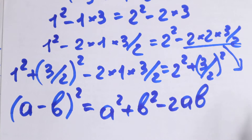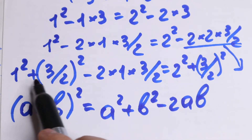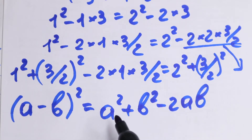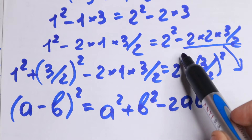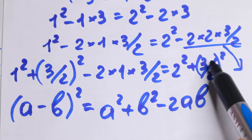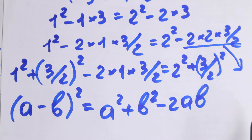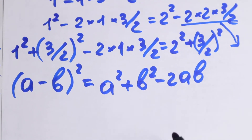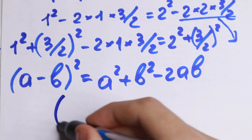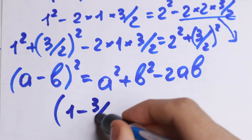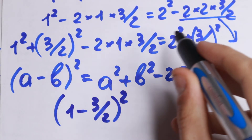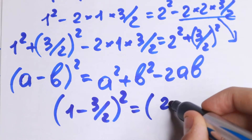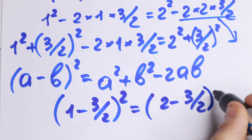Take a look at what we will have in our case: a squared plus b squared minus 2 times 1 times 3/2 — this is our formula on the left. And take a look on the right: we will have a squared, 2 squared plus b squared, 3/2 squared, and this is our 2 times a times b. So on both sides we will have our formula. On the left we will have (1 minus 3/2) squared, and on the right we will have (2 minus 3/2) squared.